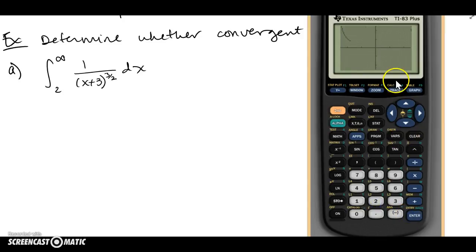And it looks like it's definitely from 2 on, a decreasing function going to the right. So there is hope that this could be convergent, but we don't know. Let's go actually do the integral.